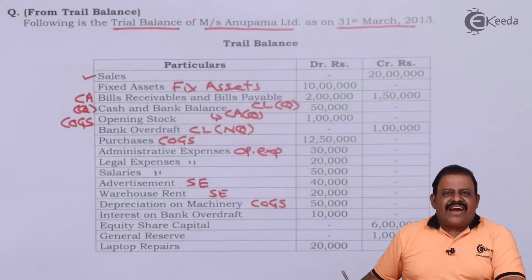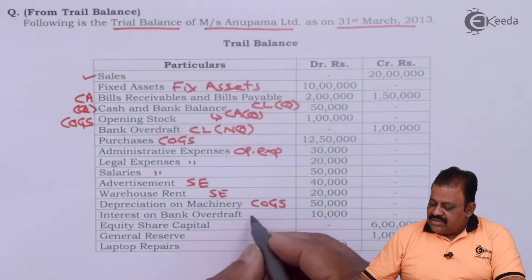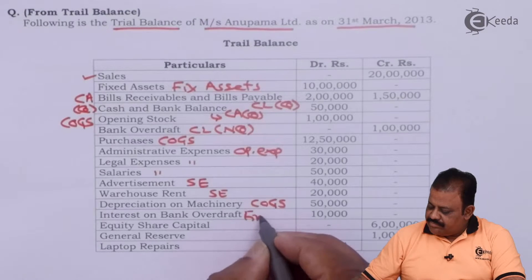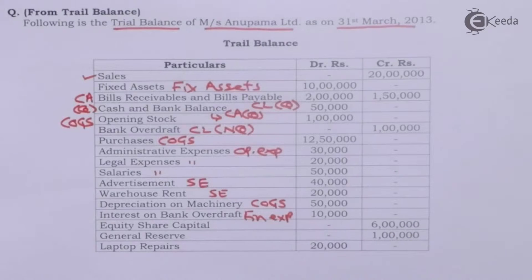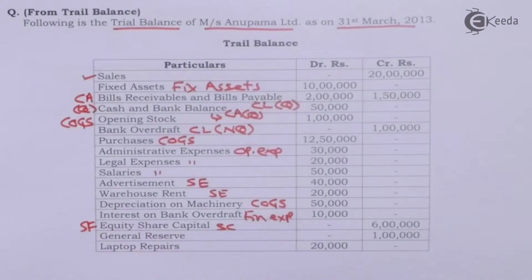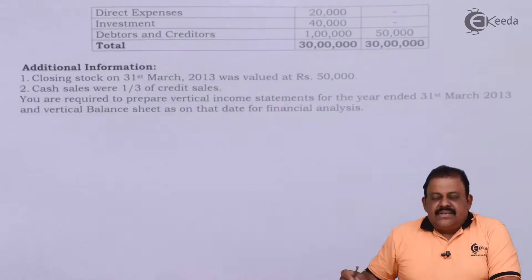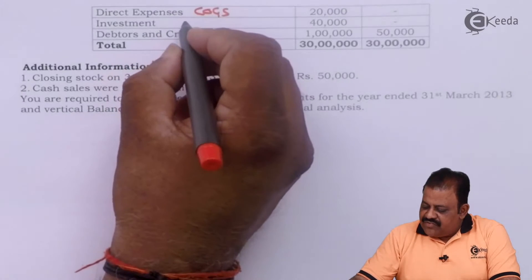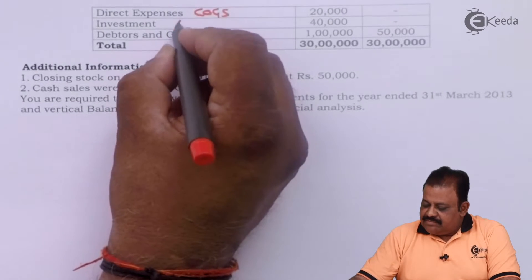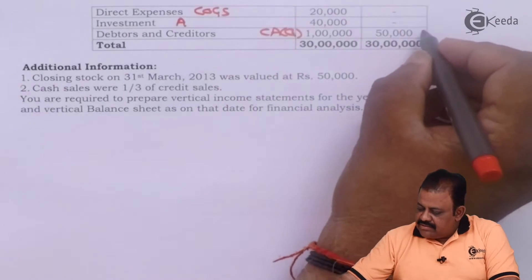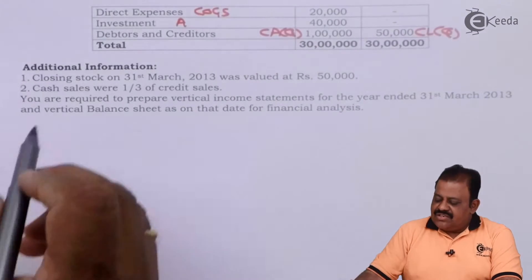Advertisement is a selling expense. Warehouse rent is a selling expense related to storage and distribution. Depreciation on machinery is part of cost of goods sold as a factory expense. Interest on bank overdraft is a financial charge. Equity share capital is part of shareholders' fund. General reserve is under reserves and surplus. Creditors are current liabilities (quick). Laptop repairs is an administration expense. Debtors are a current asset (quick). Investments are part of assets under application of funds.